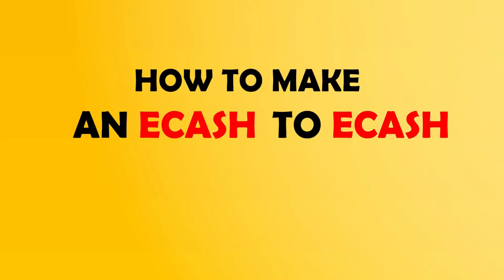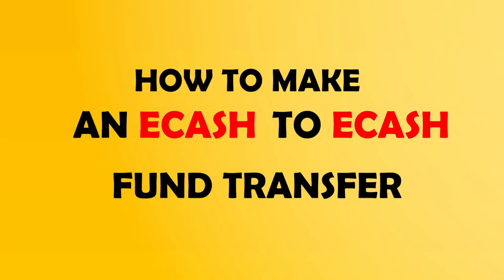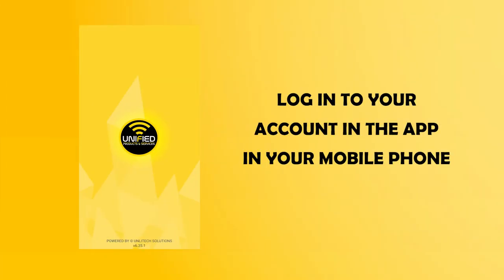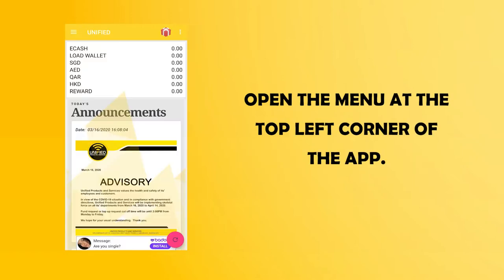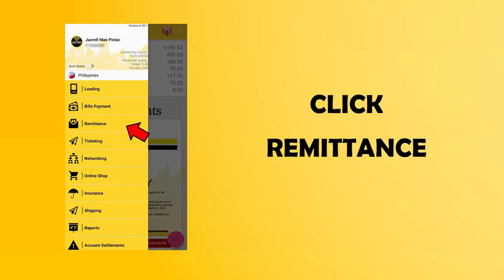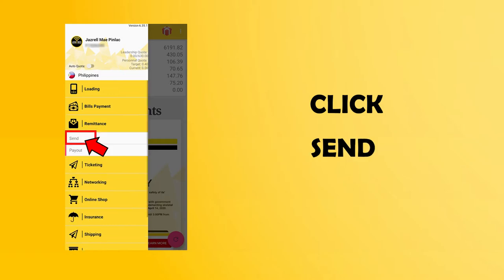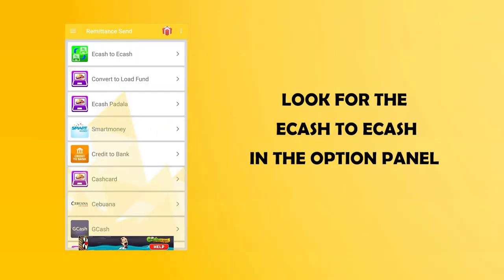How to make an eCash to eCash fund transfer? Log in to your account in the app on your mobile phone. Open the menu at the top left corner of the app. Click Remittance, then click Send. Look for the eCash to eCash in the option panel.